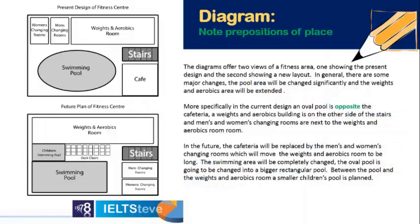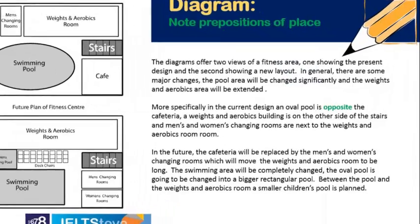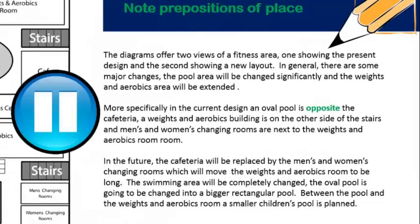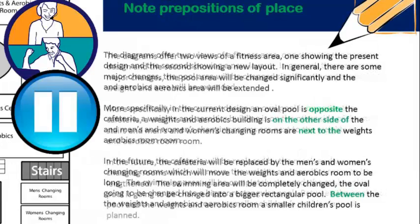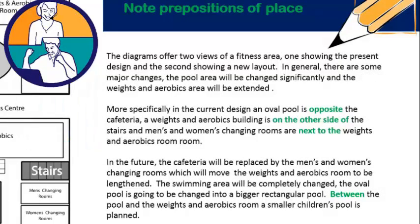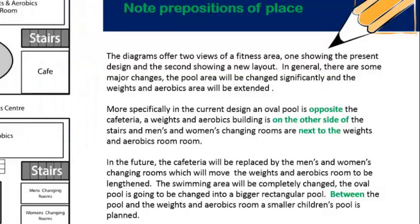Now we've also got prepositions of place. This is vocabulary you quite often need in a diagram and maybe not anywhere else in Task 1 writing. We've got 'opposite' highlighted there. Can you see examples of other prepositions of place? Here they are: 'on the other side of', 'next to', 'between'. So you need those prepositions of place — that's pretty specific vocabulary for a diagram.